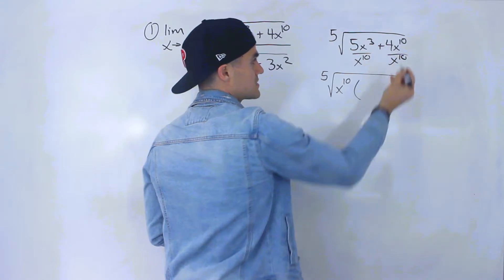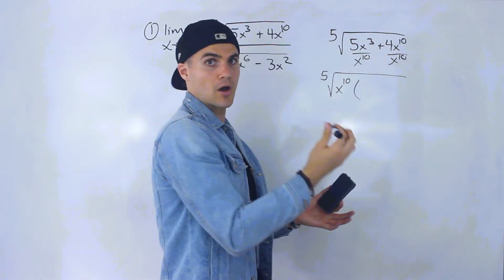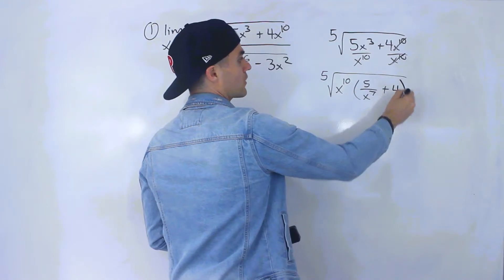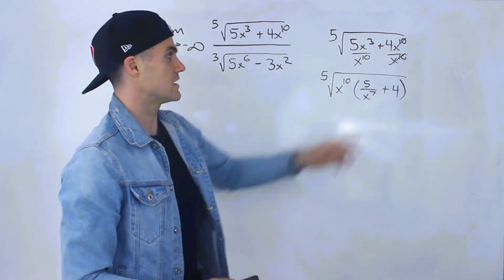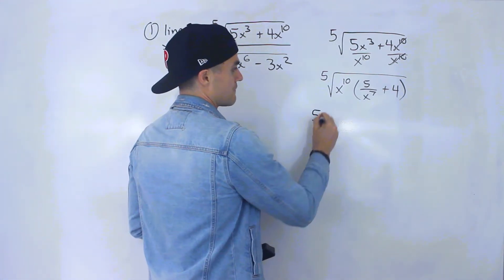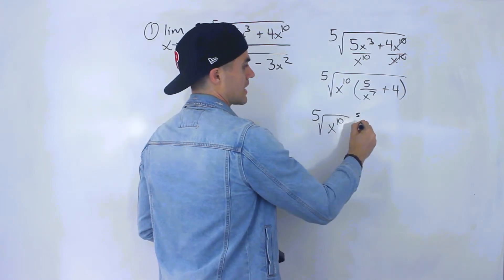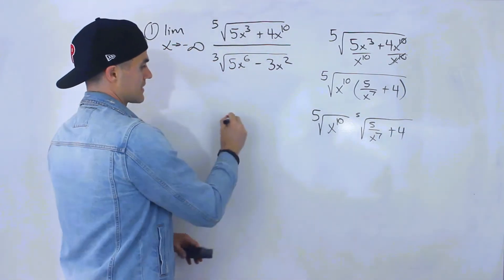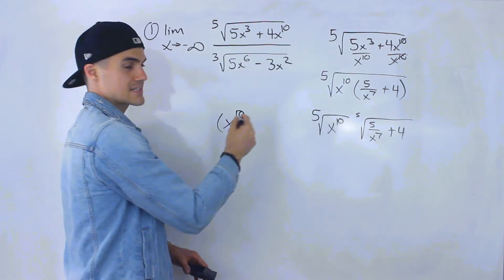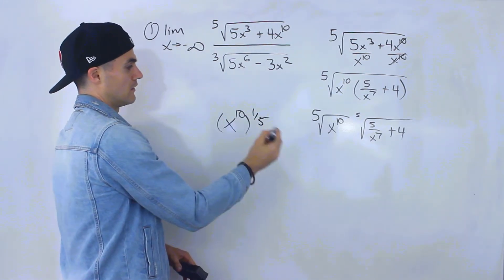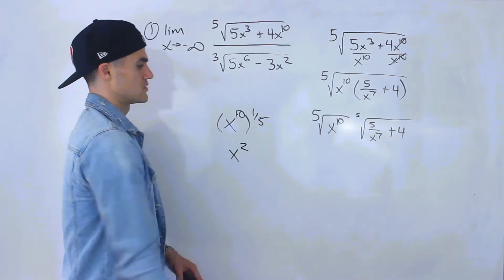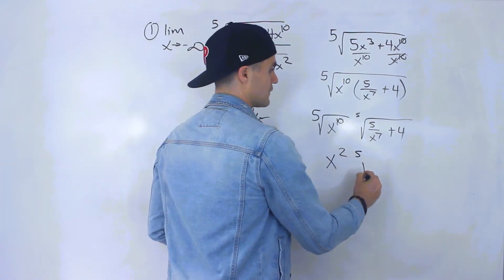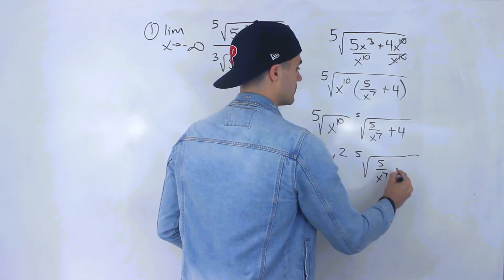We divide each term by x^10: 5x³ divided by x^10 leaves 5 over x^7, and 4x^10 divided by x^10 leaves 4. So we factor out x^10, leaving us with the fifth root of x^10 times the fifth root of (5/x^7 + 4). The fifth root of x^10 equals x^(10·1/5), which is x².